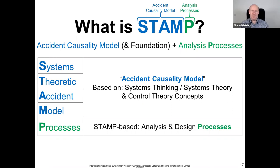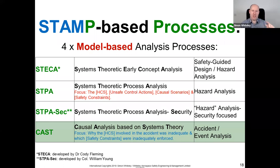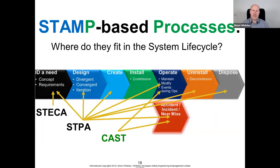The accident causality model is based on systems thinking, systems theory, and control theory concepts. There are currently four model-based analysis processes, but the one we're focusing on today is called CAST Accident Analysis — an acronym for Causal Analysis Based on Systems Theory — and it is essentially an accident and event analysis. CAST really fits in the operational phase, used during incidents, accidents, or near misses, though it doesn't stop you thinking more broadly across the whole system lifecycle.